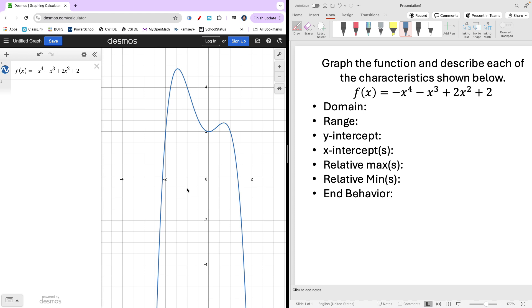Let's identify some of these key characteristics. Let's just run through these things in order. Domain. First of all, the domain of all polynomial functions will be all real numbers. That will be negative infinity to infinity, all real numbers for the domain. And that is true for all polynomial functions.